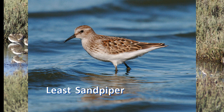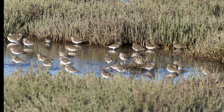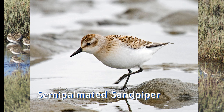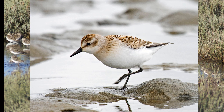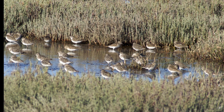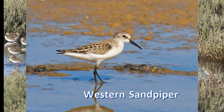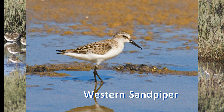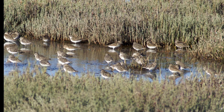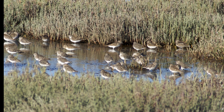Two similar small shorebirds are Baird's and white-rumped sandpipers, which are shaped a bit differently. Future videos will discuss the identification and separation of these species from each other. This video will discuss shorebird identification in general and how to separate these smaller peeps from their slightly larger cousins.